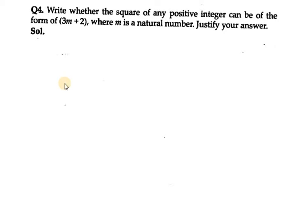Hello everyone, let's start with question number 4. In this it says write whether the square of any positive integer can be of the form 3m plus 2, where m is a natural number. Justify your answer. So we need to use Euclid's division lemma.